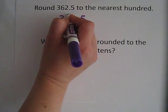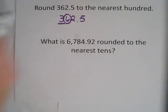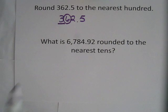Then we have to circle the number to the right of that underlined number. Because that 6 is going to be the bossy number and tell the 3 what to do.